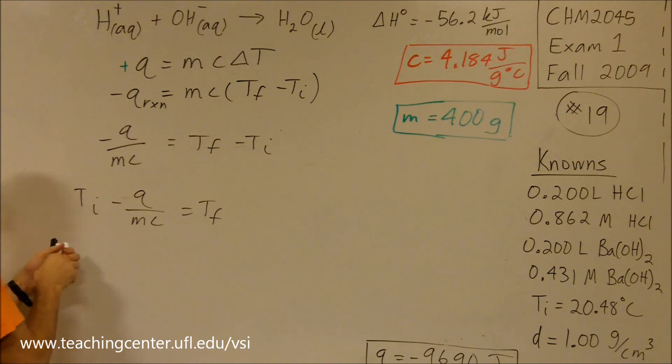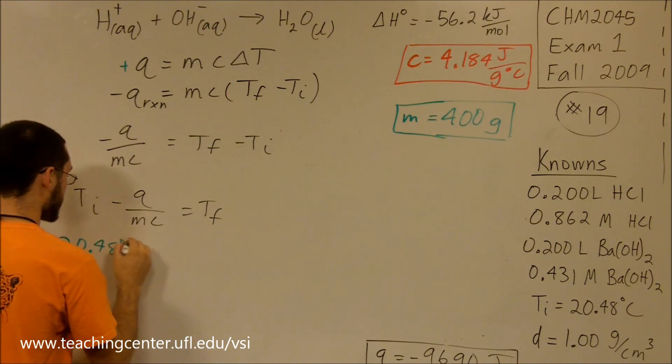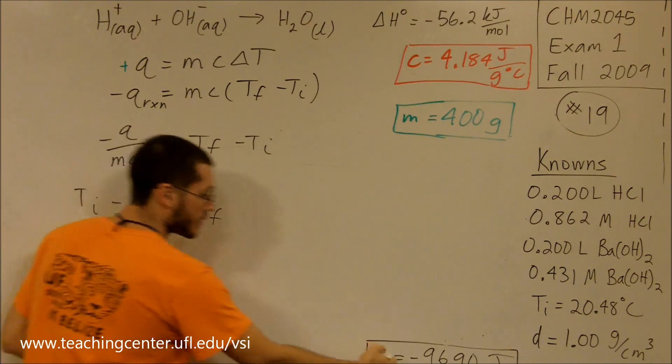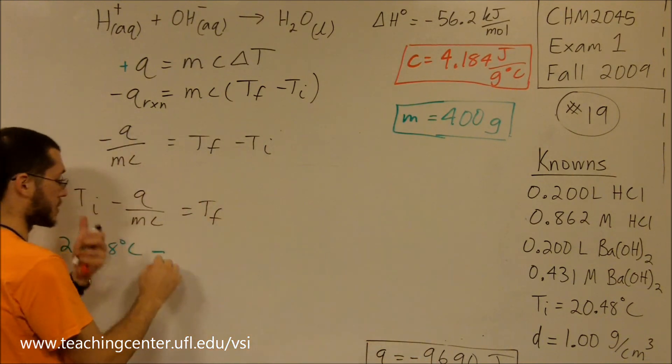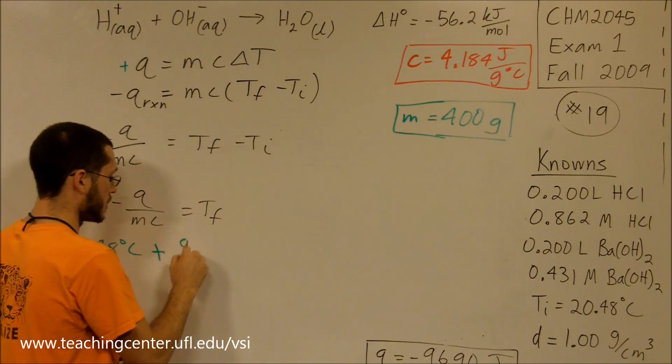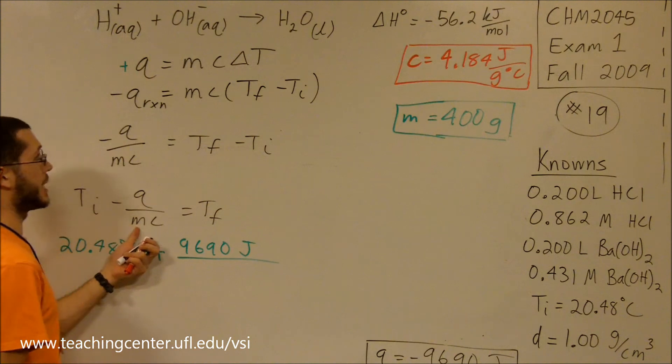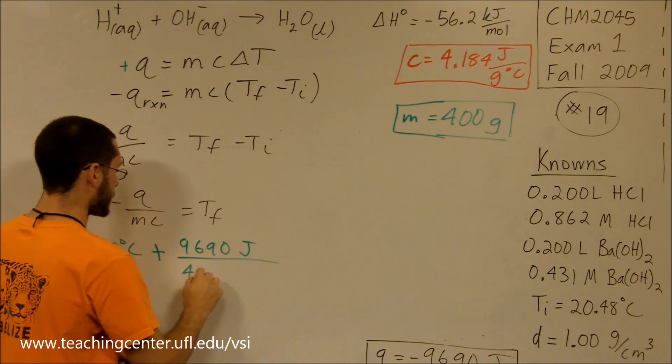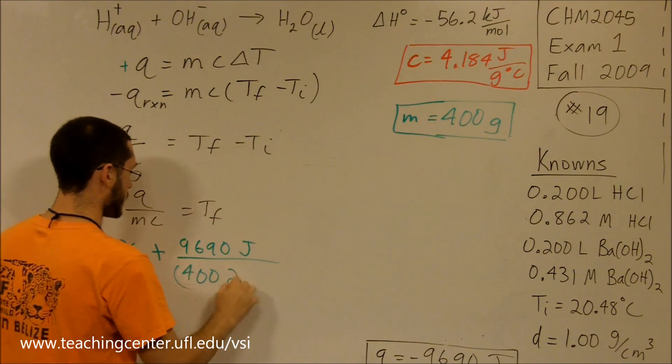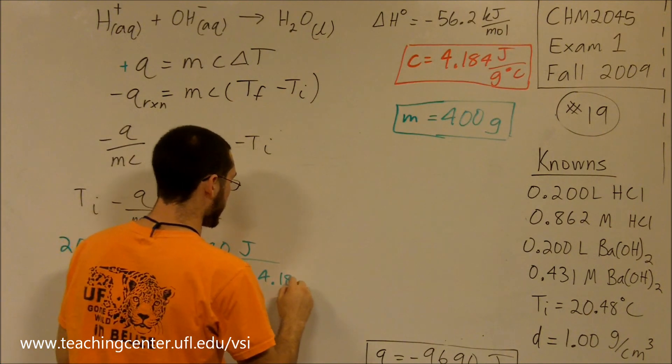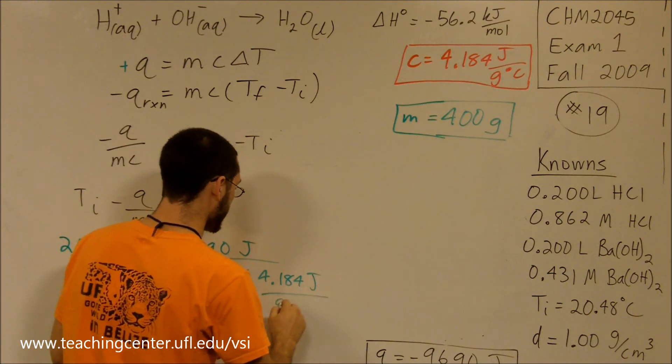Plug in temperature initial, which is 20.48 degrees Celsius, minus the energy release. Now, it's a negative 9690, so I'm going to cancel this negative. Divide by the mass of the solution, 400 grams, and then times the specific heat, 4.184 joules per gram degree Celsius. Notice that everything that needs to cancels.